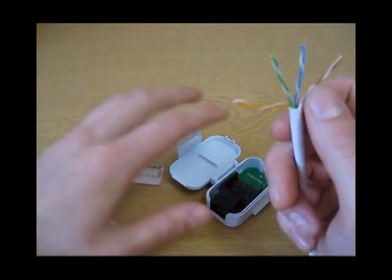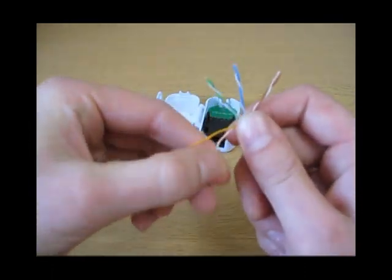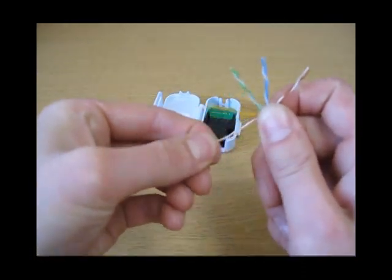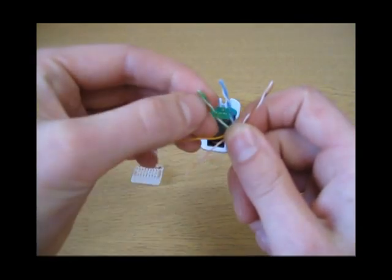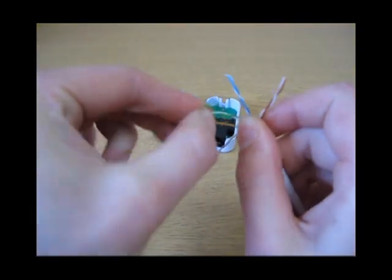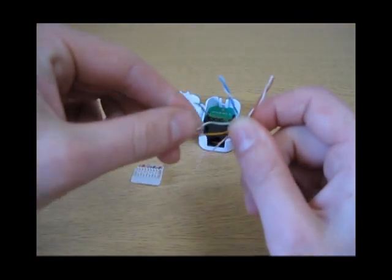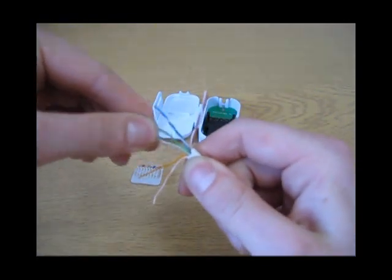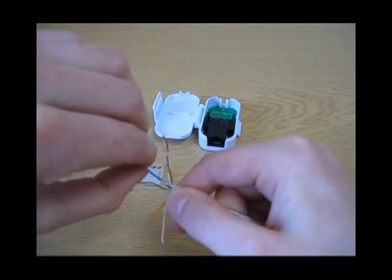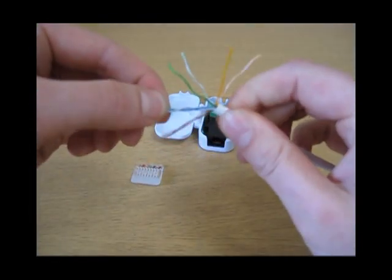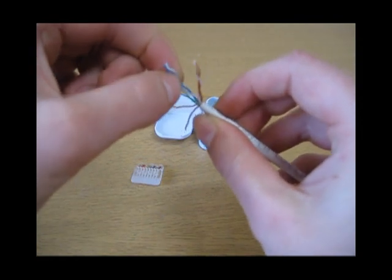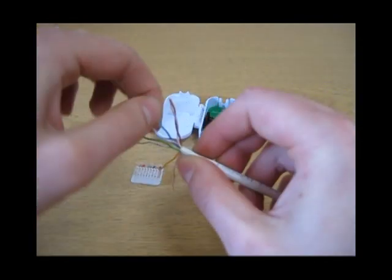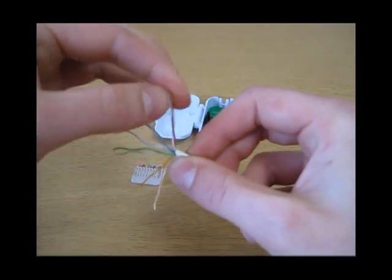So we will get the wires and untwist them, untwist the pairs and straighten them out as we do this. So we will do the green ones, straighten them out and then the blue ones, then the brown ones.